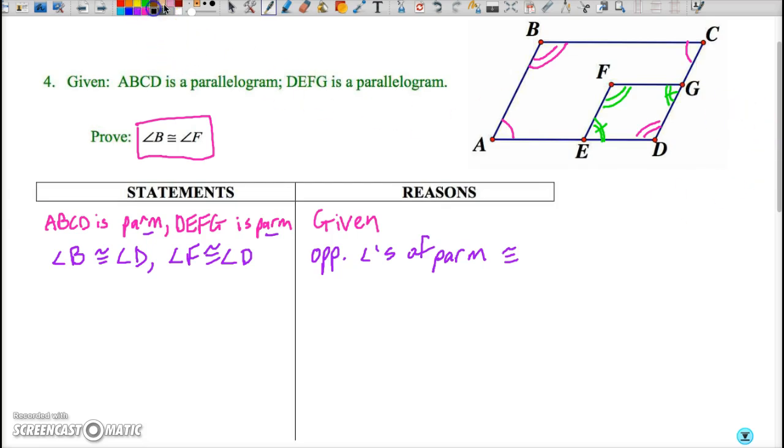Okay and then hopefully you remember from actually way back to the first unit if angle B equals D and angle F equals D we can conclude that angle B is congruent to angle F and our reason for this is of course, I beg your pardon I started writing reflexive, our reason of course is...